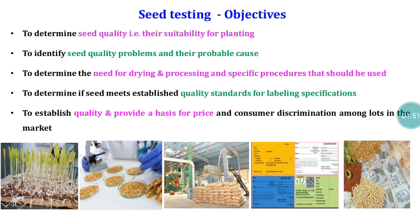Then to determine the quality standards — determination of quality standards is very much needed because in India we have a Seed Act. As per the Seed Act, labeling is compulsory and certification is voluntary. On the label we write germination percentage, moisture content, and physical purity, so the seed must be subjected to germination tests, moisture content tests, and physical purity analysis.